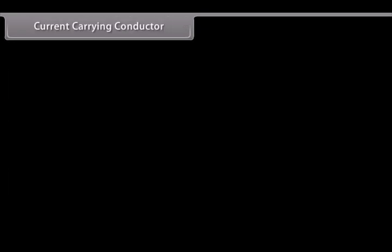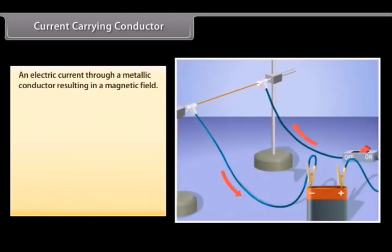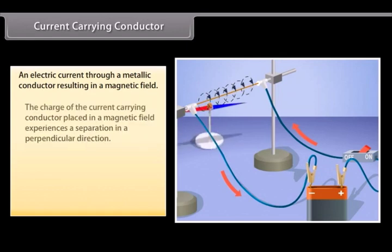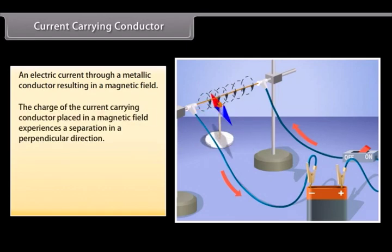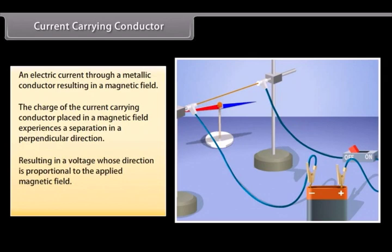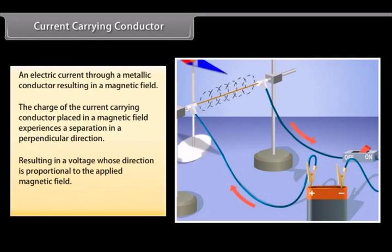Current-carrying conductor. An electric current passing through a metallic conductor results in a magnetic field being created around it. The charge of the current-carrying conductor placed in a magnetic field experiences a separation in a direction that is perpendicular to the current and the magnetic field. This results in a voltage whose direction is proportional to the applied magnetic field. This effect can also be reversed.